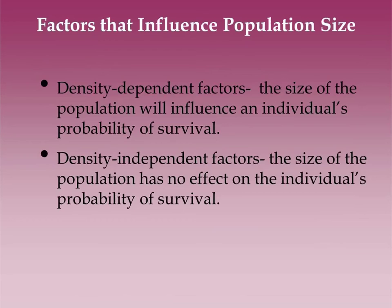Food is another example of a density-dependent factor. Smaller populations need less food, so in the case of food scarcity, it will have a bigger impact on survival and reproduction in large populations than small ones. Food would be considered a limiting resource — something the population can't live without. If this limiting resource decreases, so does the size of the population that depends on it. Water and nest sites are other common limiting resources.